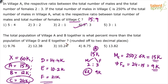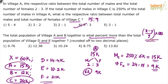Next question: the total population of villages A and B together is what percent more than the total population of villages D and E together? This uses the formula: X is what percent more than Y equals (X minus Y) divided by Y into 100. Here X is A plus B, which is 15,000 plus 12,000 equals 27,000. Y is D plus E, which is 14.4k plus 10.2k equals 24.6k.